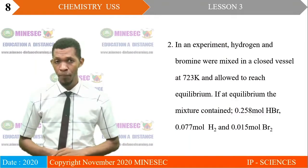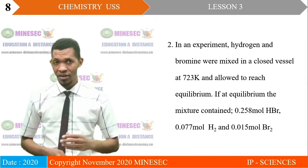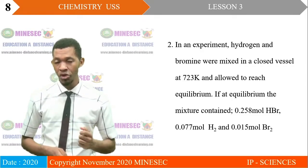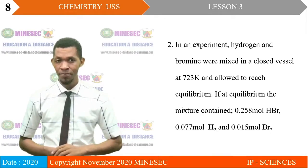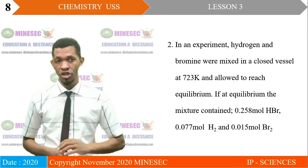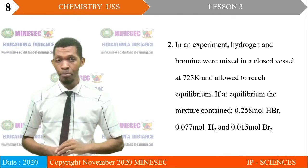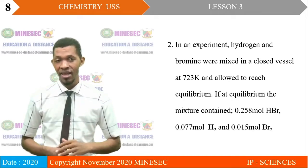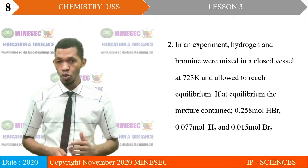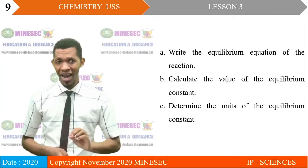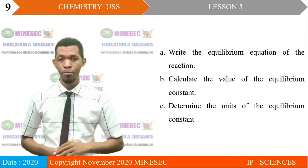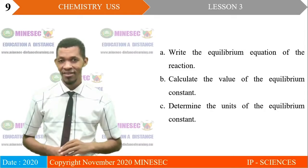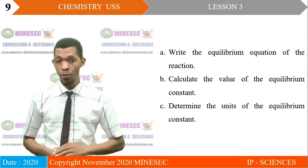Question 2. In an experiment, hydrogen and bromine were mixed in a closed vessel at 723 Kelvin and allowed to reach equilibrium. At equilibrium the mixture contained 0.258 moles of hydrogen bromide, 0.077 moles of hydrogen gas, and 0.015 moles of bromine. Part A: write the equilibrium equation of the reaction. Part B: calculate the value of the equilibrium constant. Part C: determine the unit of the equilibrium constant.